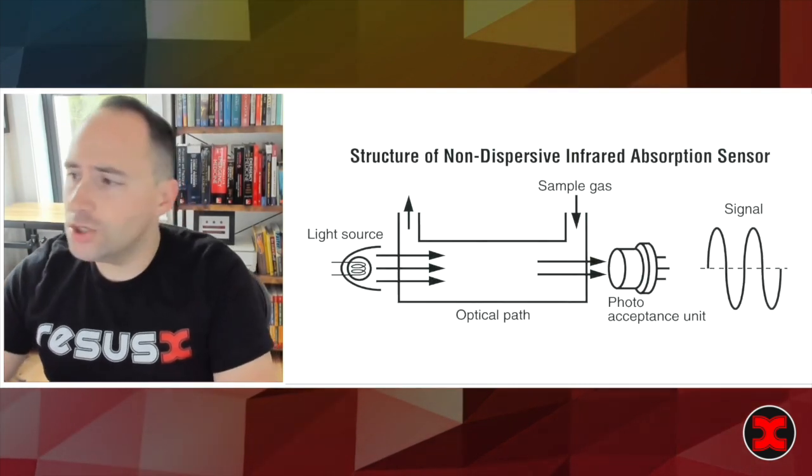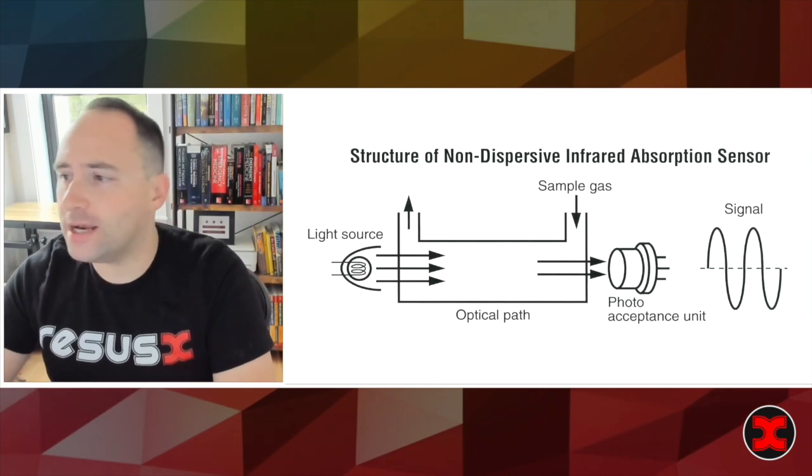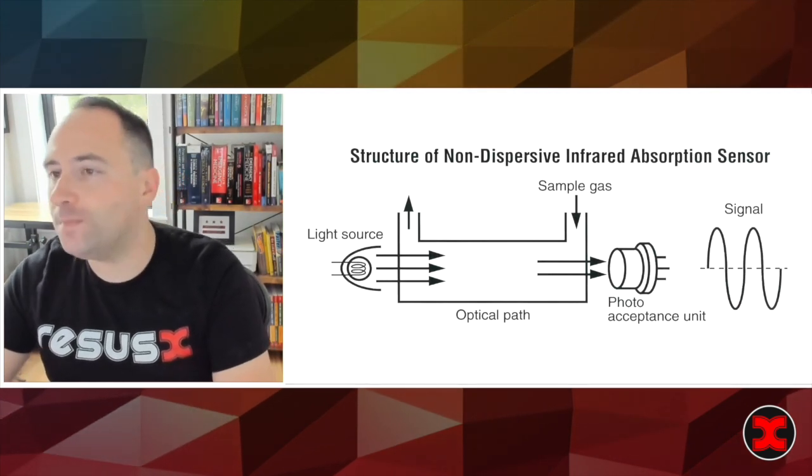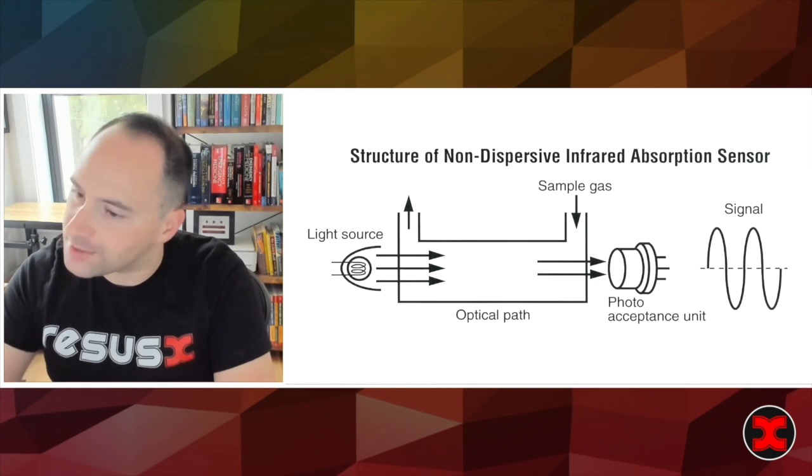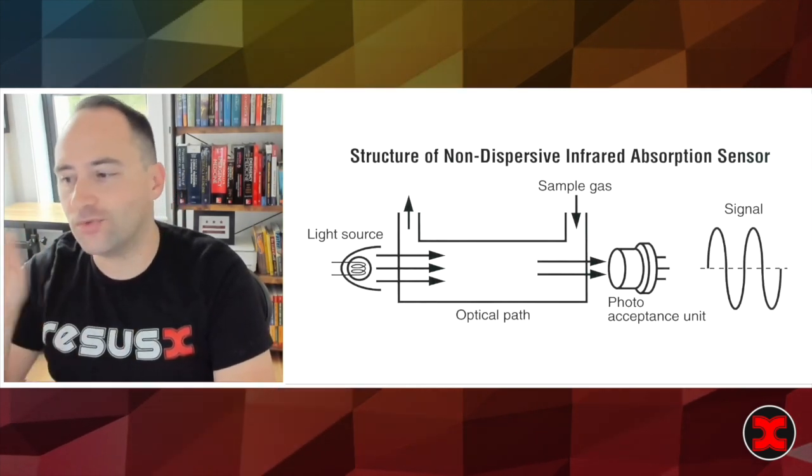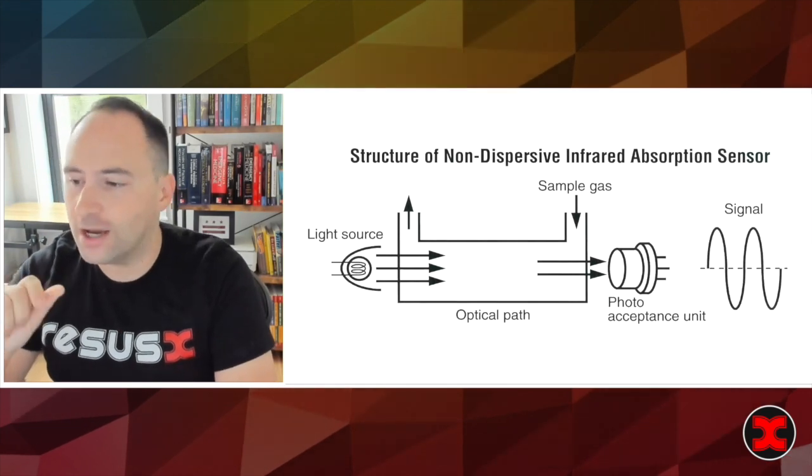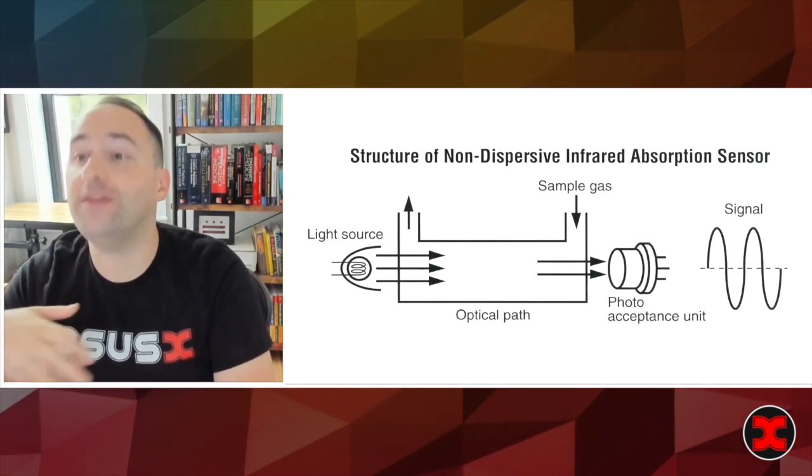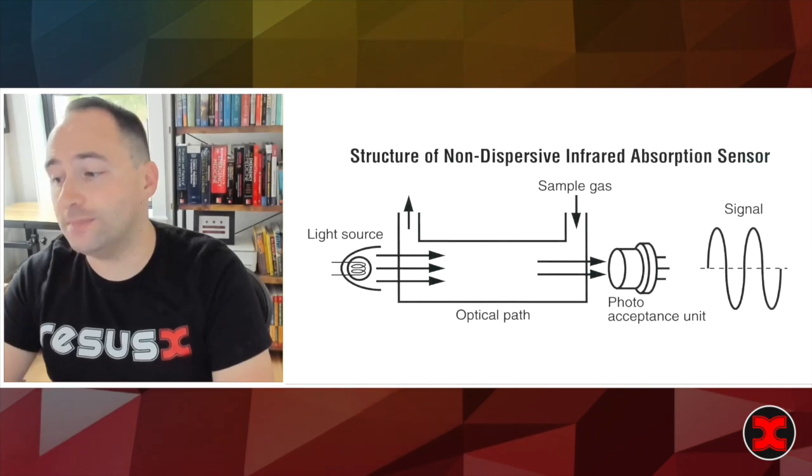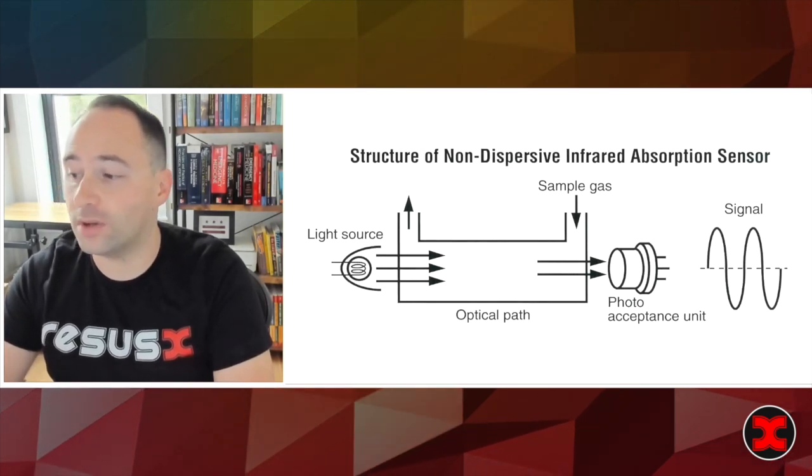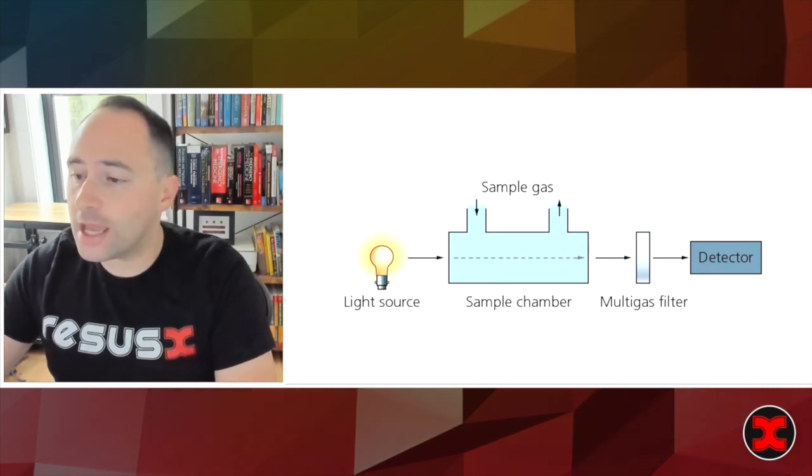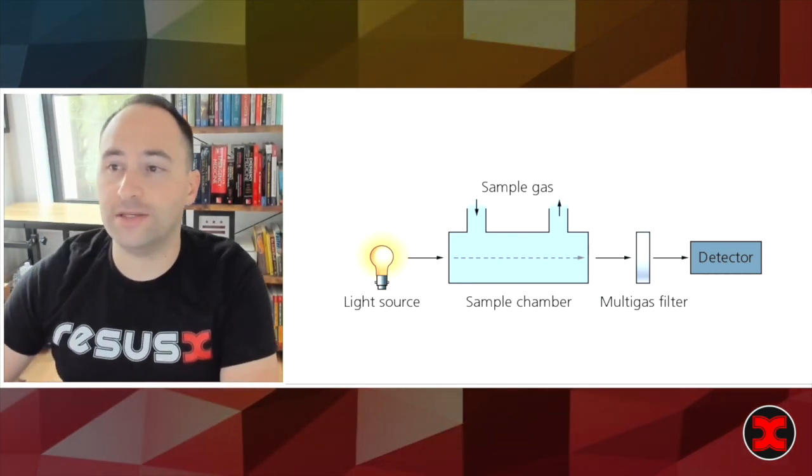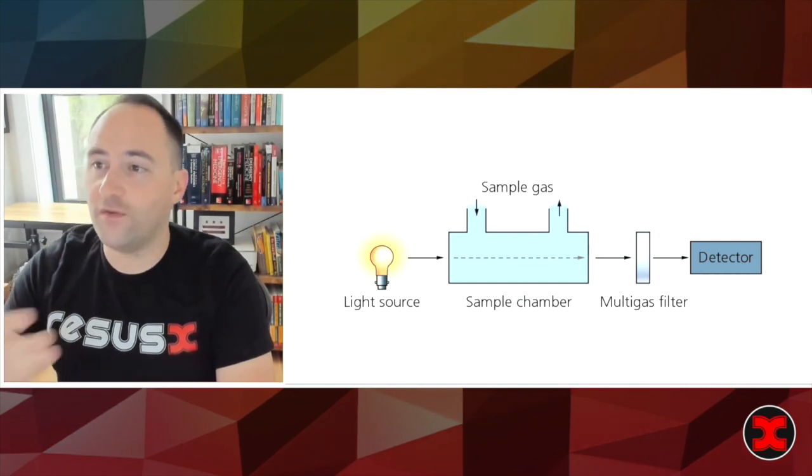So how does this work? The way that modern end tidal works is by non-dispersive infrared absorption and this is actually a pretty simple concept with a fancy name. A beam of infrared light passes through a gas that your patient exhales and the resulting intensity of the transmitted light is then directed to a photo detector. So fun fact, CO2 absorbs light around 4.26 micrometers and as more CO2 is present in the exhaled gas, less infrared is absorbed at this wavelength and therefore less will get to the detector. In other words, the more CO2 that's present in your patient's exhaled gas, the more infrared light is absorbed and this is graphically represented on the screen as the waveform that we all know and love.